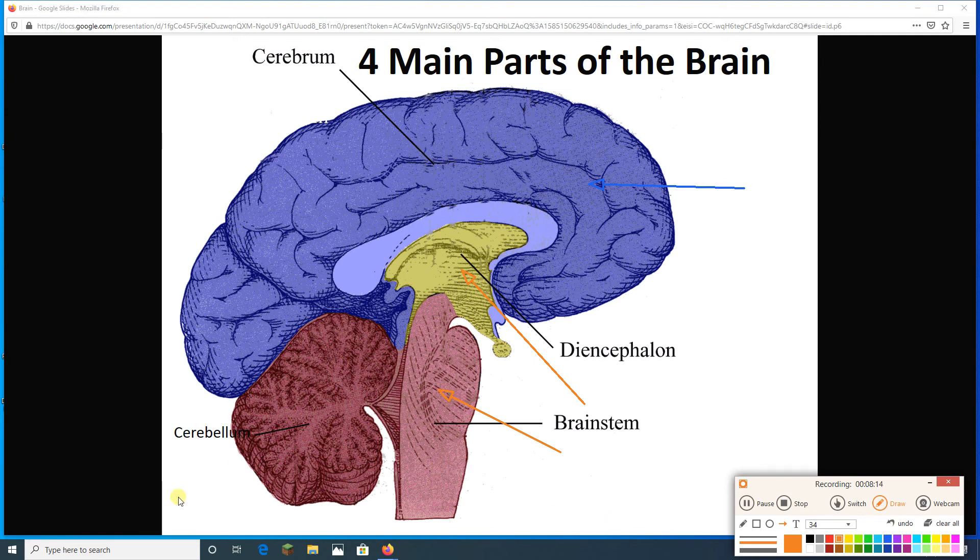And then coming down below the diencephalon is the brainstem. And then behind, posterior to the brainstem, is the cerebellum. So, those are four major parts to our brain. All right.